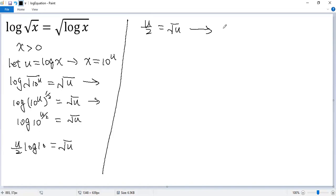So we get u squared over 4 equals u. Both sides multiplied by 4. We get u squared equals 4u. Subtract 4u from both sides.